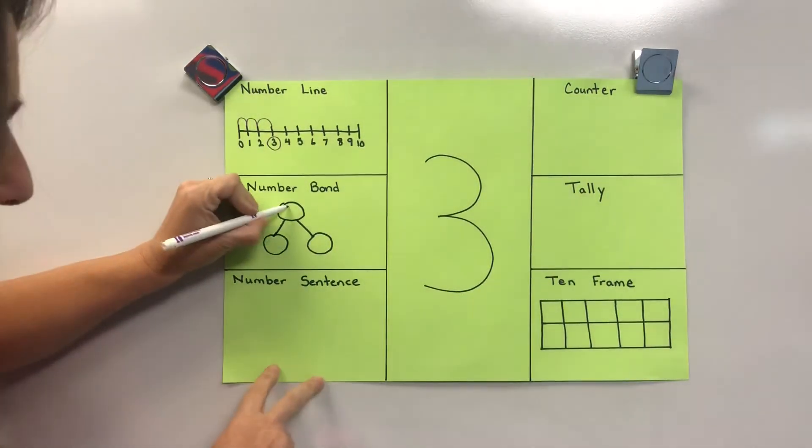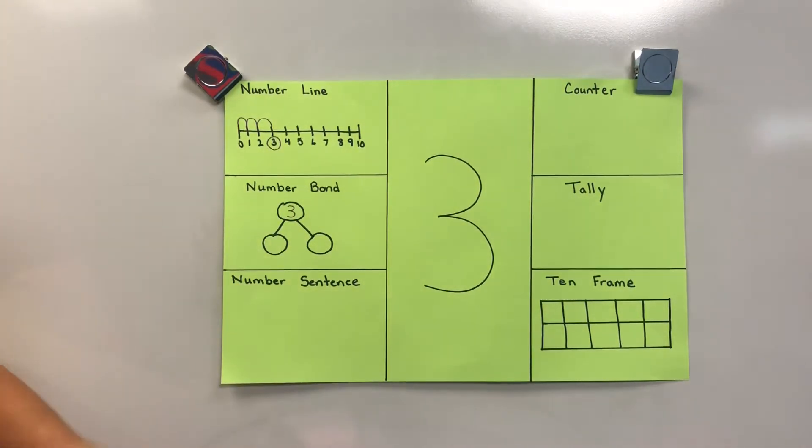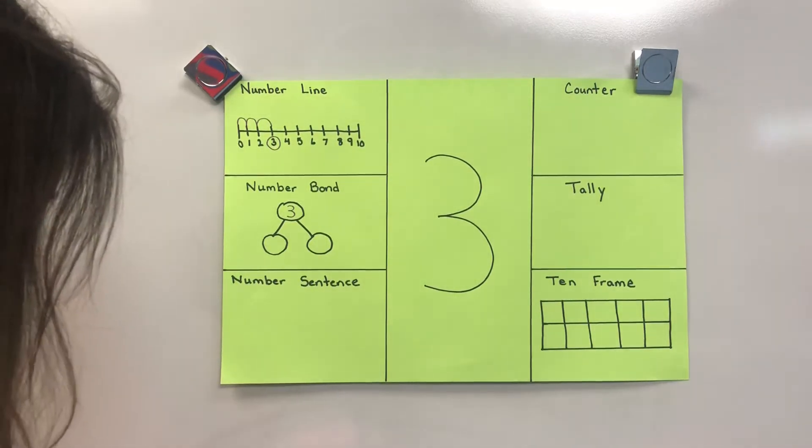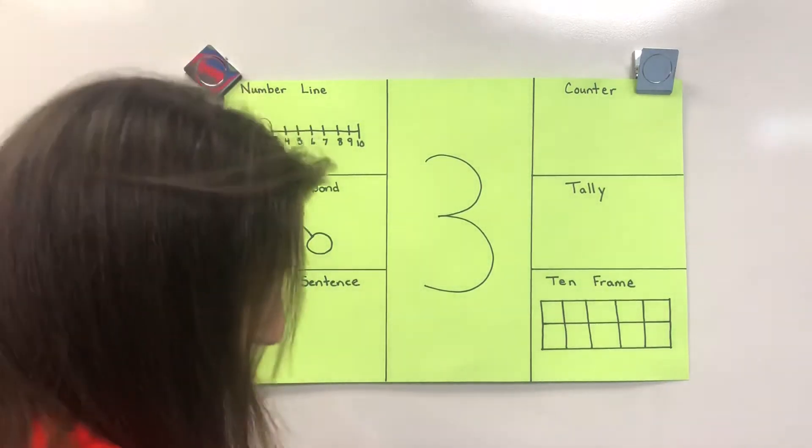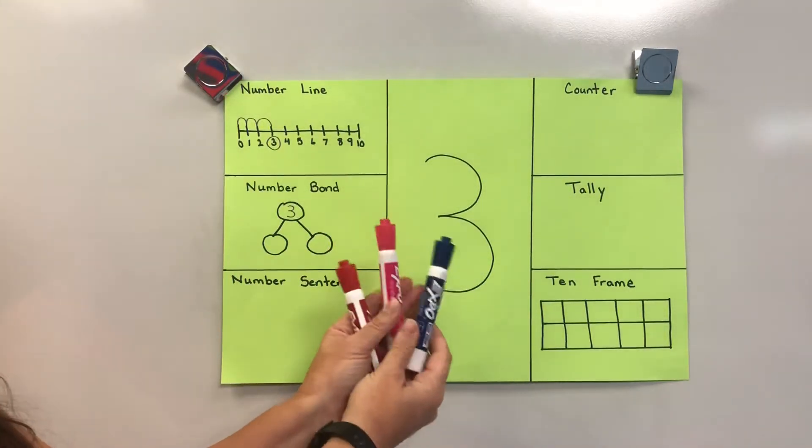A number bond. If we're making the number three, there are lots of different ways you can make number three. What I'm going to do to explain it is grab three markers. Here are three markers.